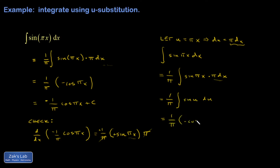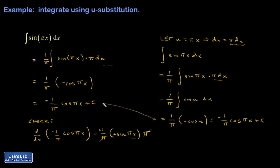That's negative cosine u. So I get negative 1 over pi cosine of u, but u is pi x. And then I'll make sure to put my plus c on there. So I get the same answer either way. I'm just always encouraging you to take this informal approach if you happen to see it.